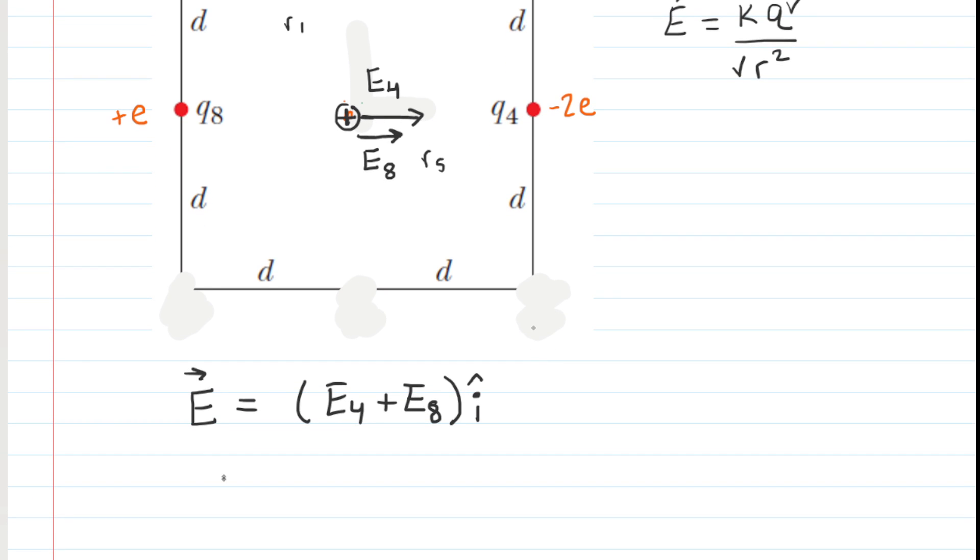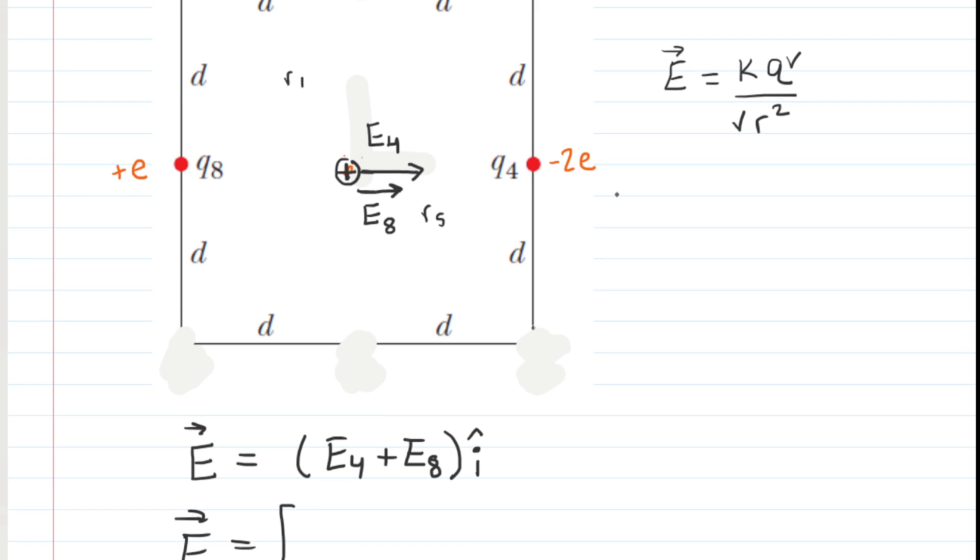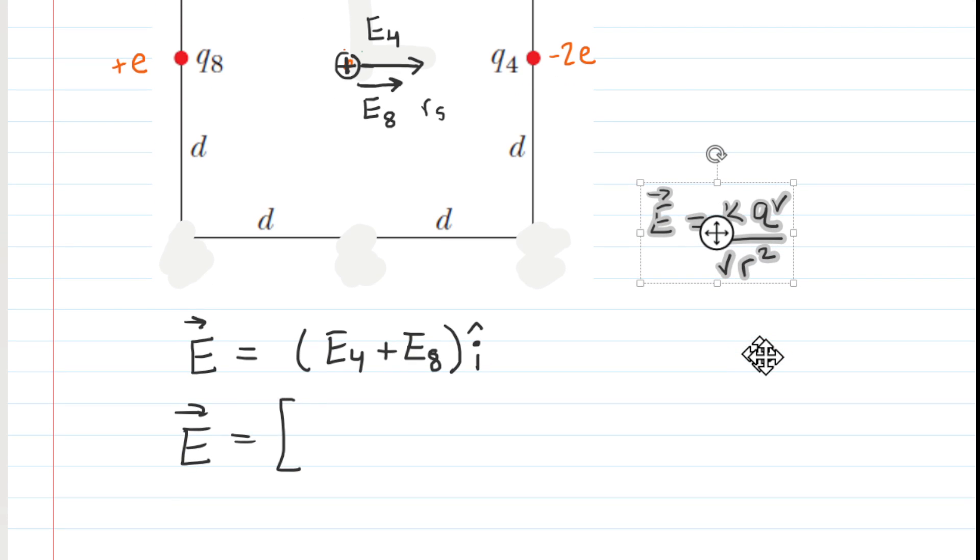So now we have to start filling in the expression for the E4 and the E8. Now, remember, the equation is above. I'm going to just drag it down here. But this is the equation we're using for the electric field produced by these two point charges. So for E4, we would have K times Q4, the magnitude of Q4 divided by the distance to the center squared, the distance to the center is going to be D. So in fact, here is Q4 right here, there's the center, you can see D is the distance from Q4 to the center. So this would be over D squared.